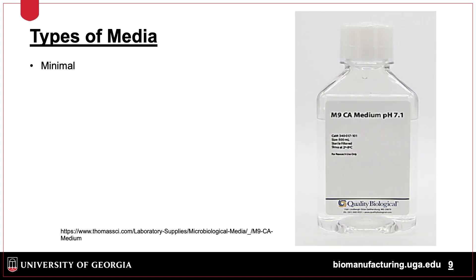Five different types of media can be used in fermentation. As its name suggests, minimal media provides the bare essentials for cell growth. This media is commonly used for labeling of cells with radioisotopes or as a base for fed-batch fermentation.